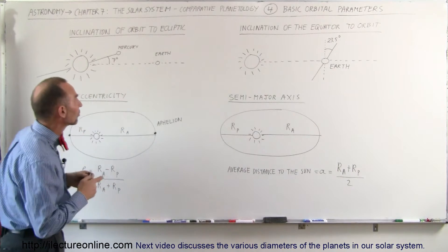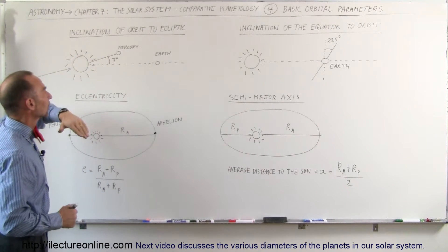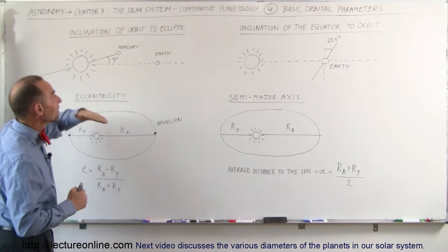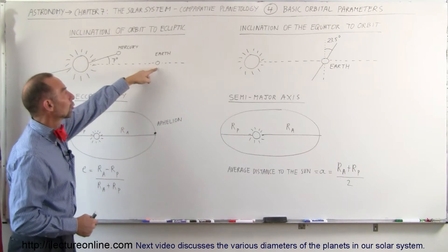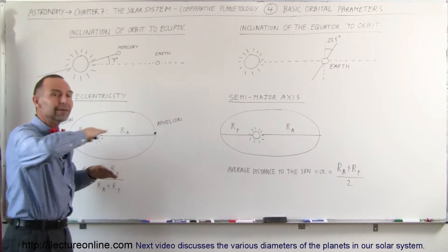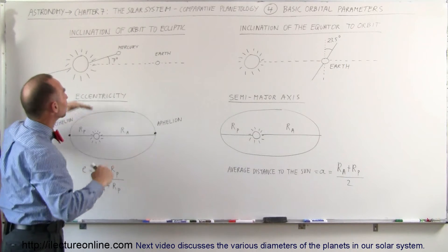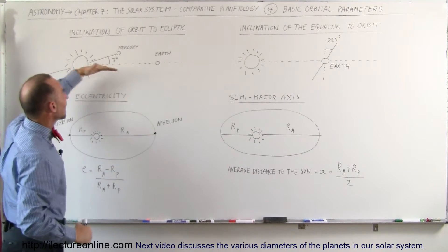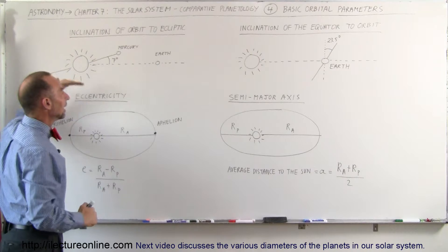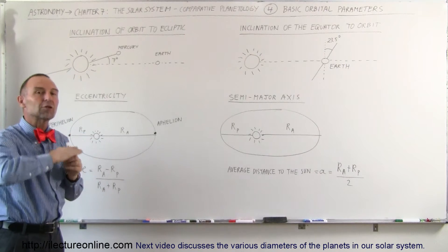So, what are these things? First of all, the inclination of the orbit to the ecliptic. The ecliptic is the imaginary plane that is formed by the Earth's orbit. The Earth going around the Sun every 365 and a quarter days or so makes a plane, an imaginary plane, and so we call that the ecliptic of the solar system.